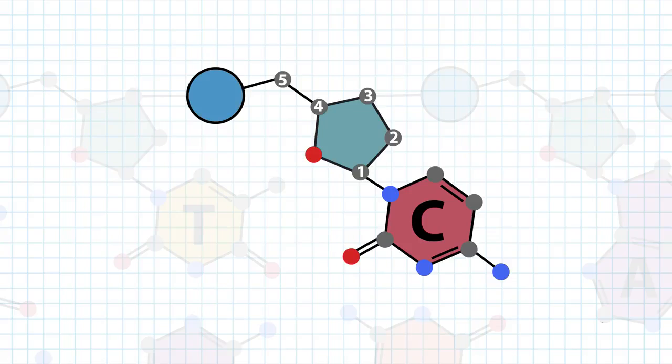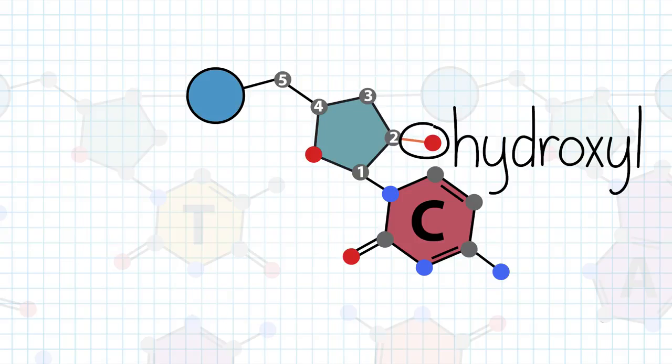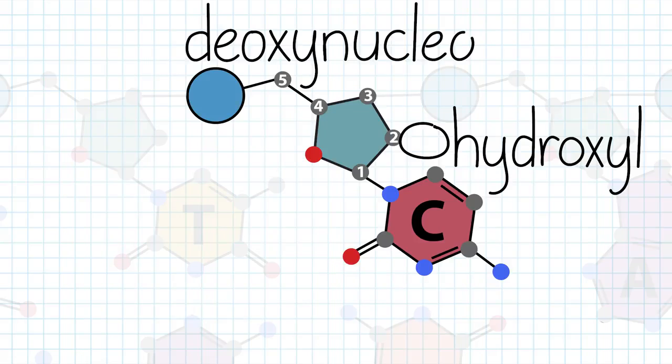The sugar is called deoxyribose, because it is missing a hydroxyl group at the two prime carbon, which is present in ribose. Because of this, nucleotides in DNA, deoxyribonucleic acid, are called deoxynucleotides.